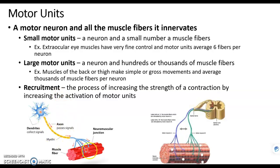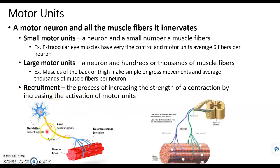Recruitment means using more or less motor units depending on the load. So if one motor unit isn't enough, our brain will say we need two motor units. You can see the axons of two neurons here — more muscle fibers are being stimulated, which produces a stronger contraction because two motor units are being used. You might need three or four. That process is called recruitment, and it's how we produce stronger contractions by recruiting more neurons for more motor units.